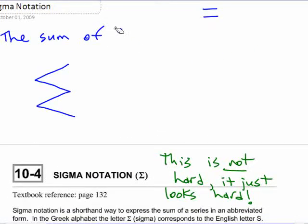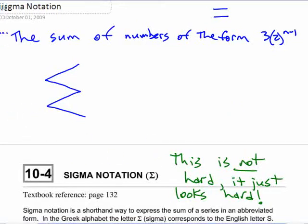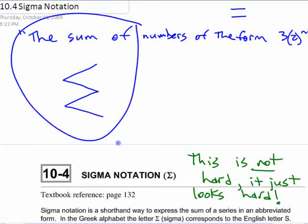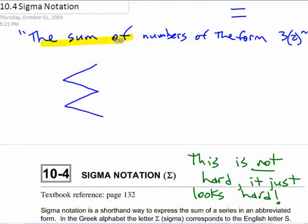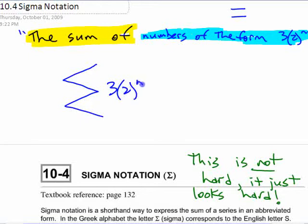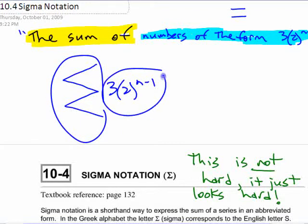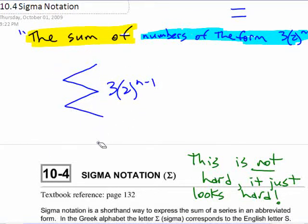So, if you wanted to say the sum of numbers of the form, three times two to the n minus one, the mathematicians would use this symbol here for this, right? That means the sum of, all right, this is the sum of. If you want to say numbers of the form, that formula, you just put that formula down after it. The sum of numbers of that form, just put that down, three times two to the n minus one. So, this means the sum of a sequence where that's what the numbers look like. That's the formula for how to write the numbers.